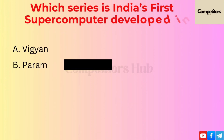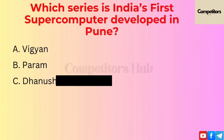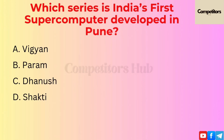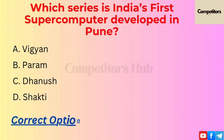The next question is: which series is India's first supercomputer developed in Pune? Option A: Vigyan. Option B: PARAM. Option C: Tanush. Option D: Shakti. The correct option is B, PARAM.